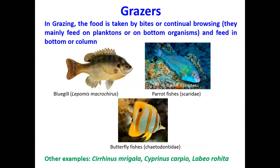The second feeding type is grazers. Grazers feed similarly to land animals like cows, buffaloes, and goats which graze on grassy land. The same grazing feeding habit is also found in some fishes — they basically feed on plankton or organisms present on the bottom of the water body and some in the column region. Examples include bluegills, parrotfish, butterfly fish, and in freshwater, Cirrhinus mrigala, Cyprinus carpio, and Labeo rohita, which also come under grazers.